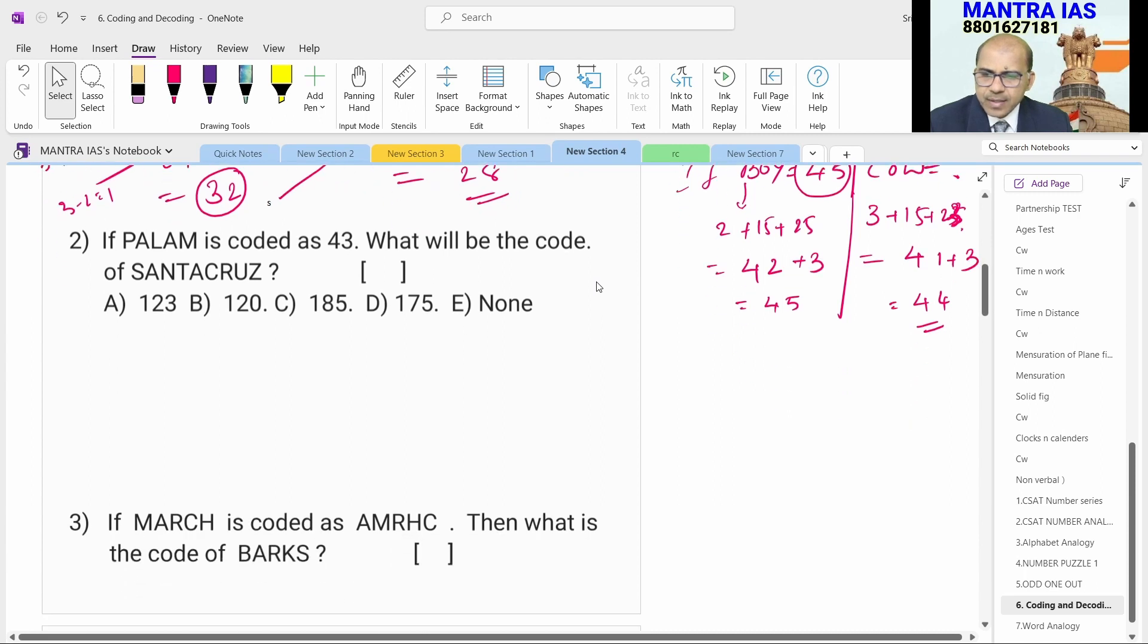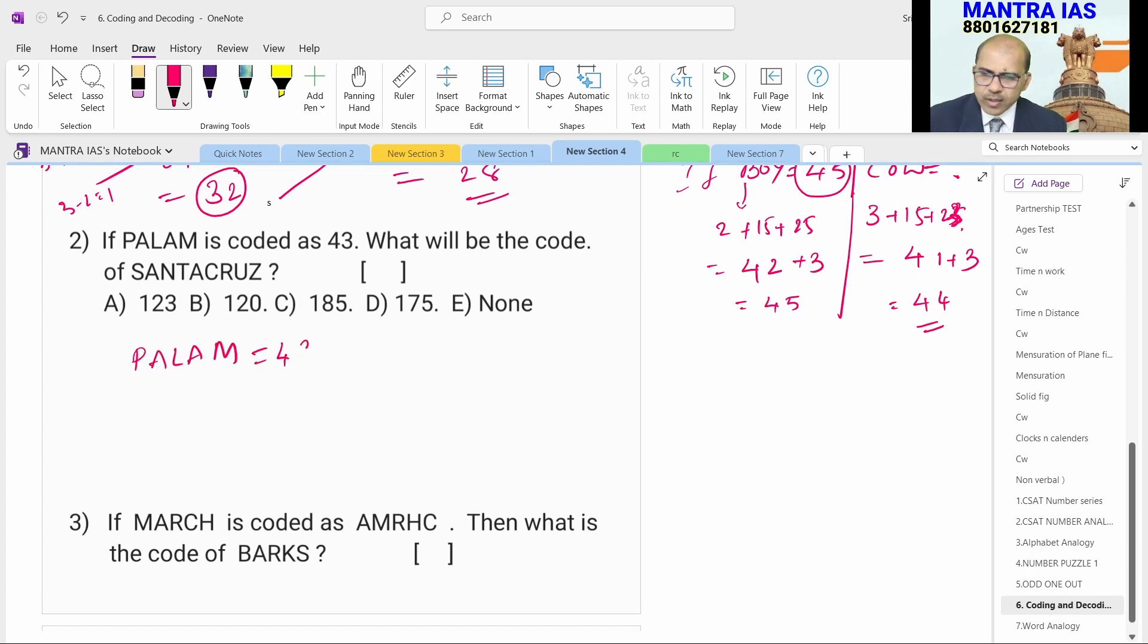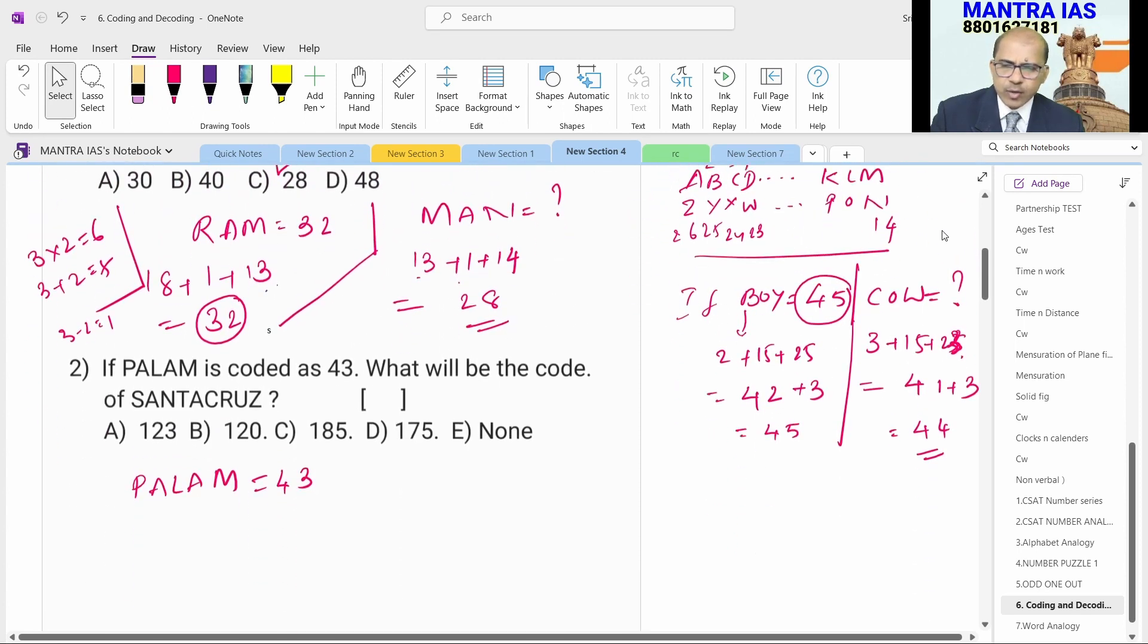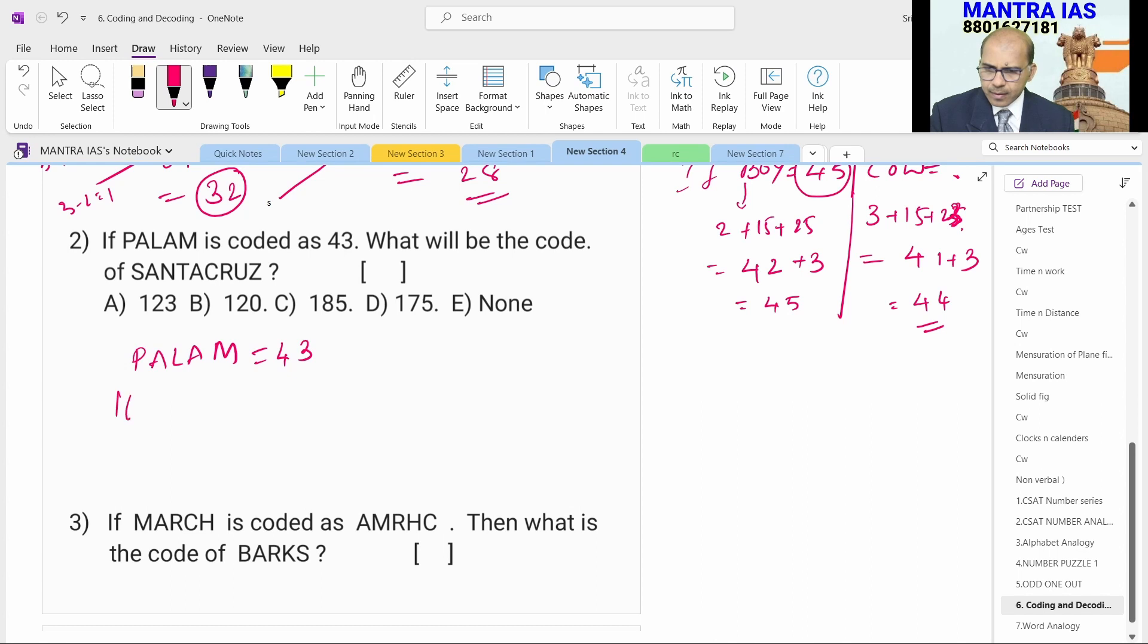Second question. PALAM is coded as 43. How this has become 43? P is 16, A is 1, L is 12, A is 1 and M is 13. Observe this one, 3 plus 1 is 4, then 6, 7 plus 6 is 13, then 2, 3. So adding up the whole place values of the concerned word PALAM is 43.